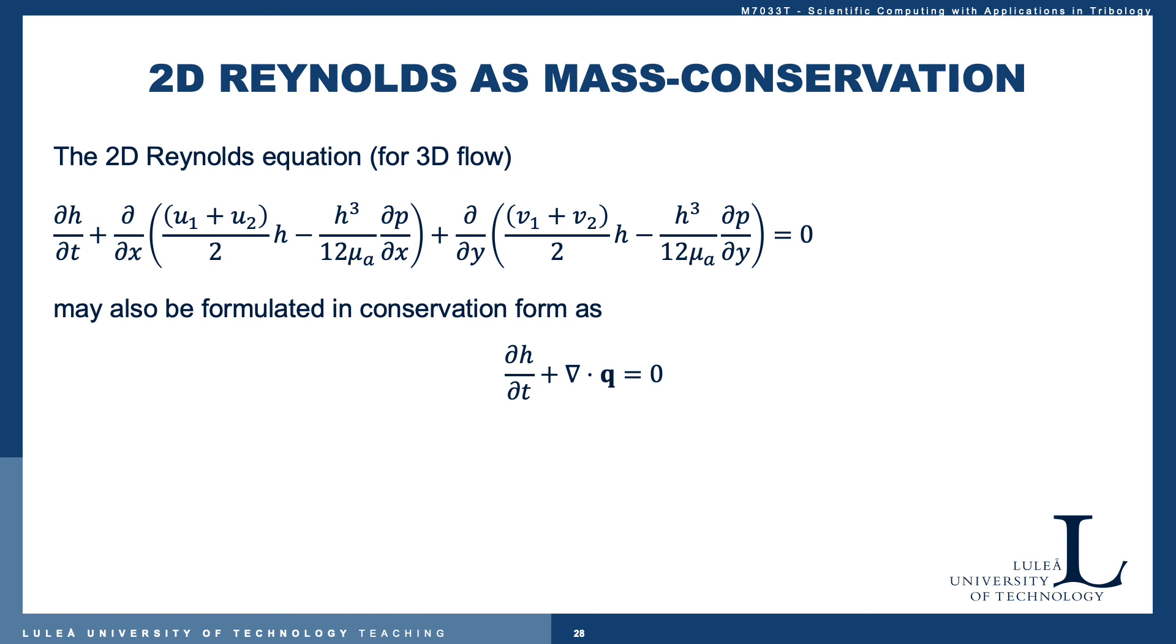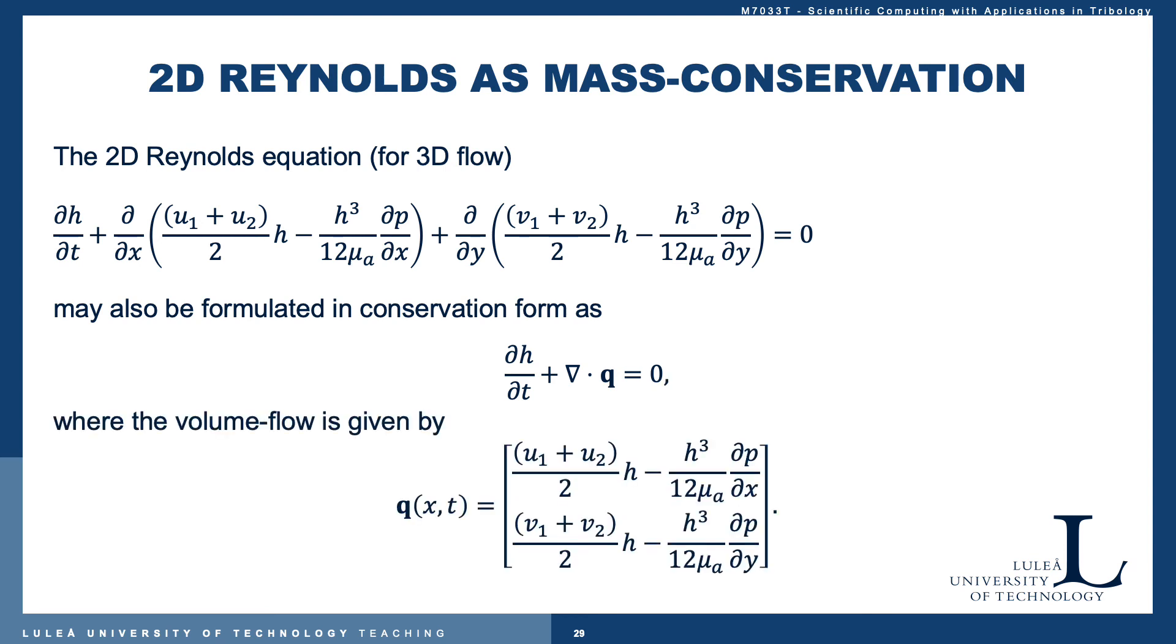The lower-dimensional 2D Reynolds equation for 3D flow: the time derivative of the mass flow may also be formulated in conservation form as seen here. The time derivative of h can be understood or interpreted as the accumulation of volume in the system. The divergence term is the difference in volume flow in versus volume flow out. q here is the volume flow given by this expression in vector form.